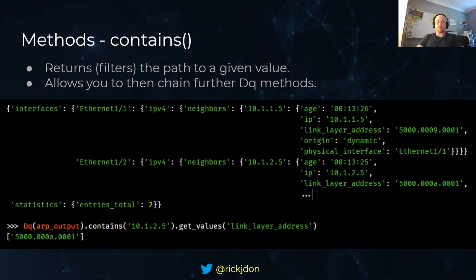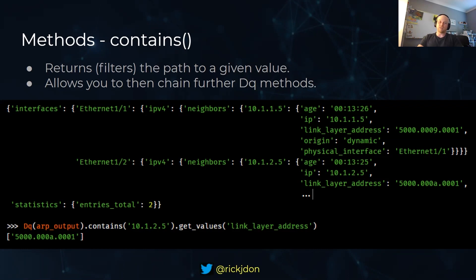Here's an example using ARP output. We look for a value - in this case we wanted to get the IP address. Once we've got that filtered path down to that value, we can then use get_values to get the key for the MAC address and retrieve that information.